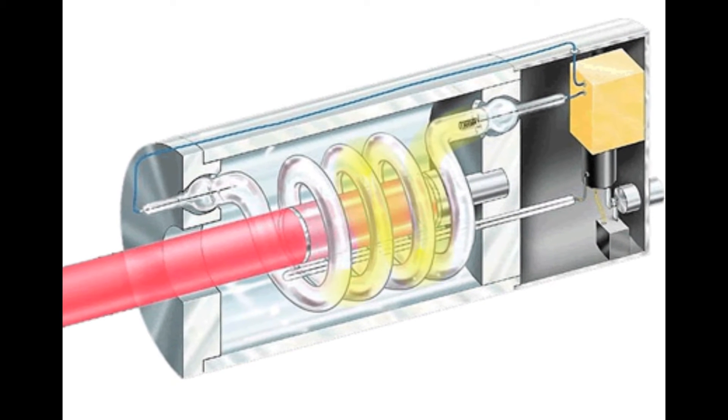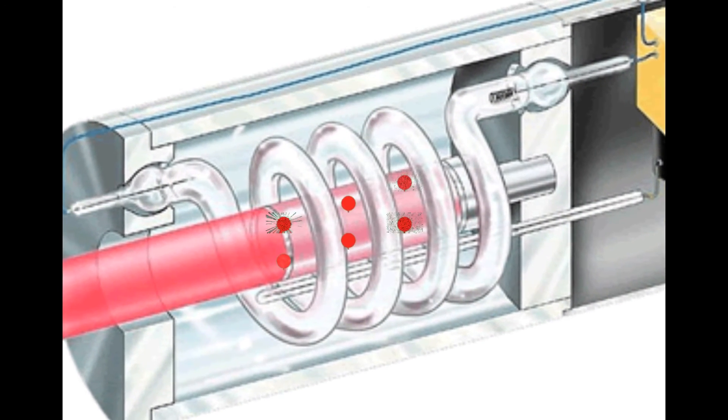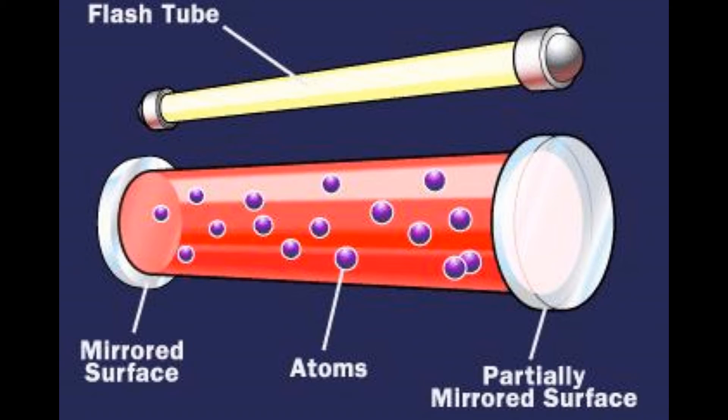High voltage electricity causes the quartz flash tube to emit an intense burst of light, exciting some of the atoms in the ruby crystal to higher energy levels.